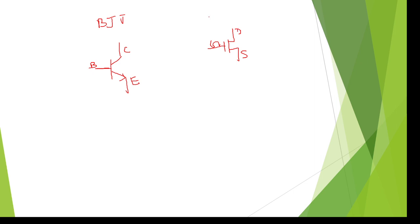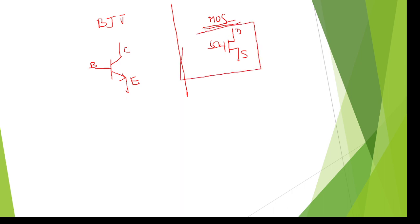It is a voltage control device. So these are the reasons why, to design anything in VLSI technology, we prefer mostly to design any chip — even to design mobiles or anything — we are going to choose MOS technology, BiCMOS, or CMOS technology to design any chip in VLSI technology. Thank you.